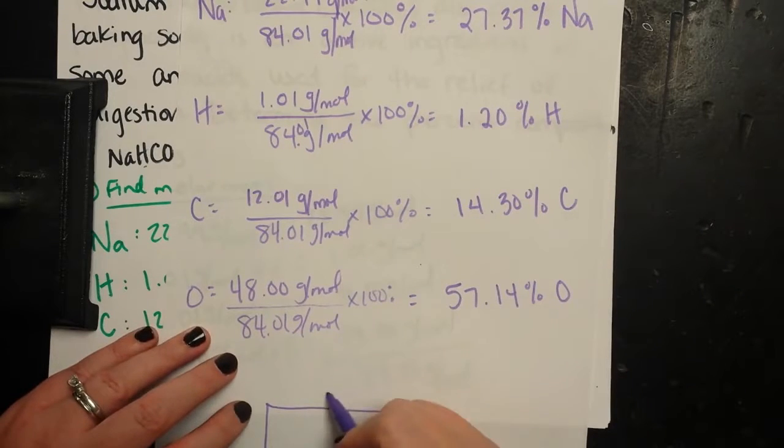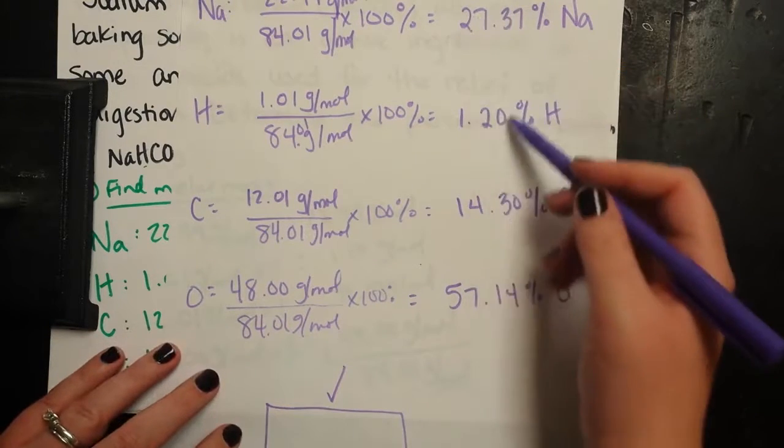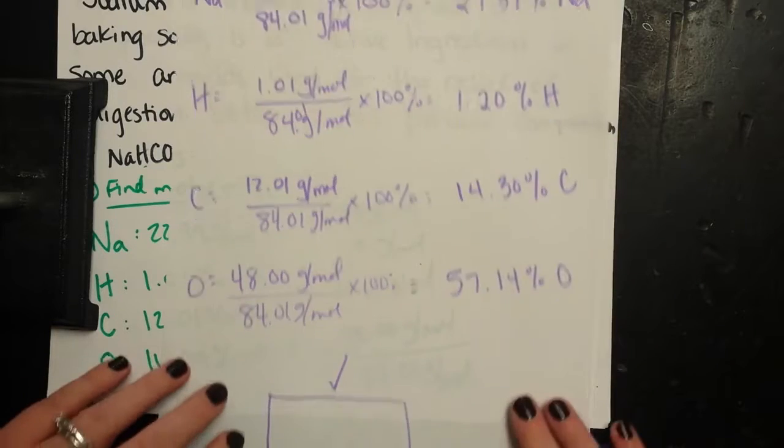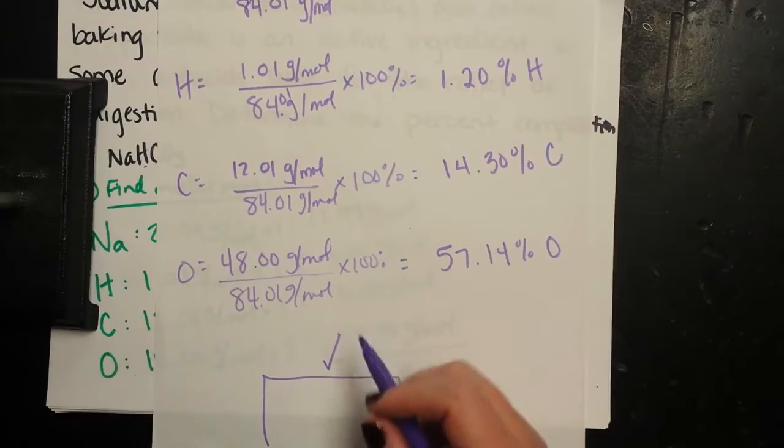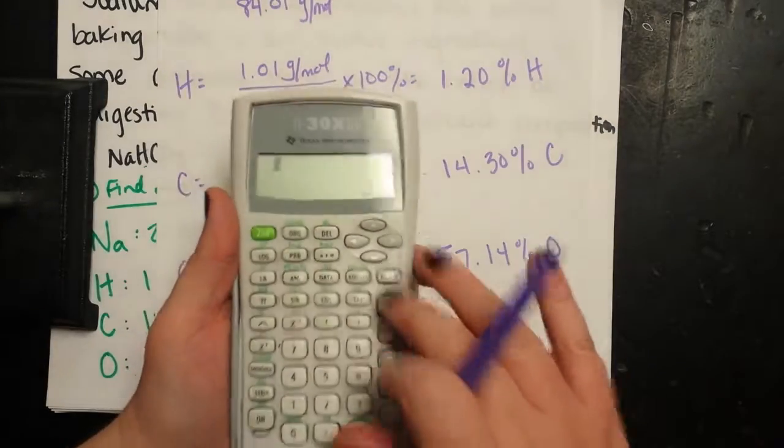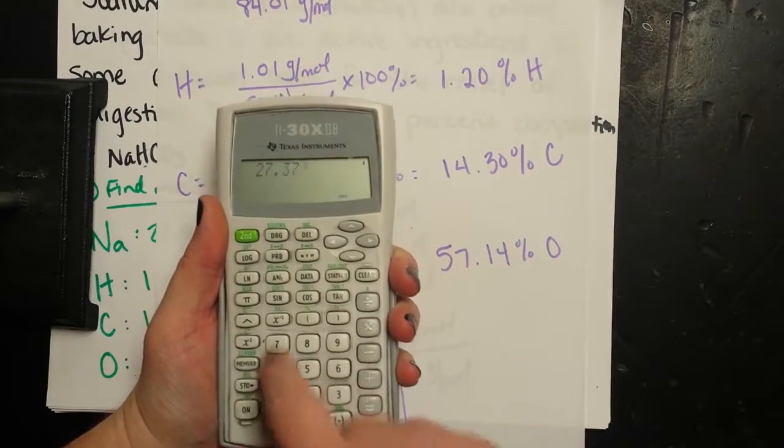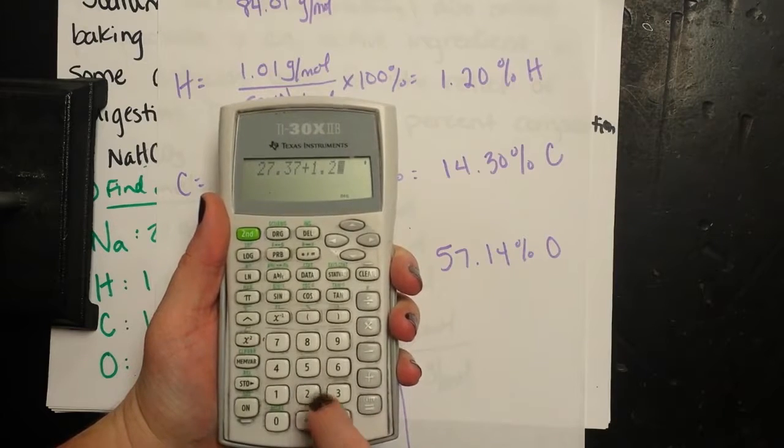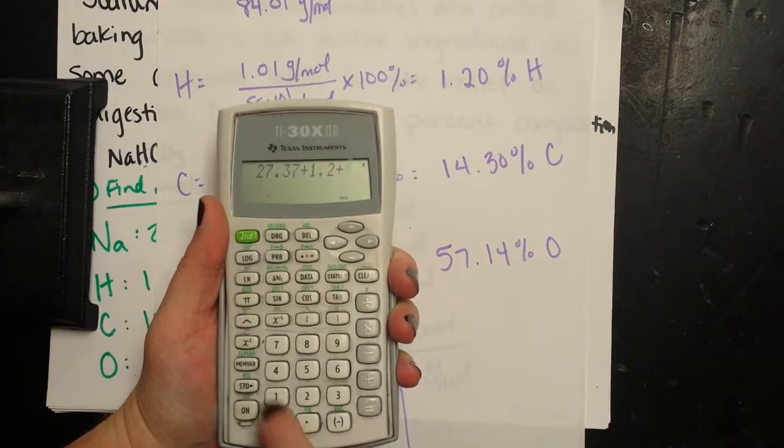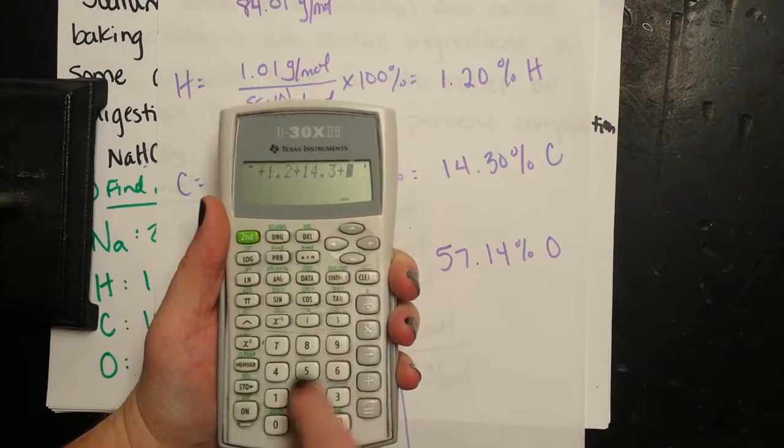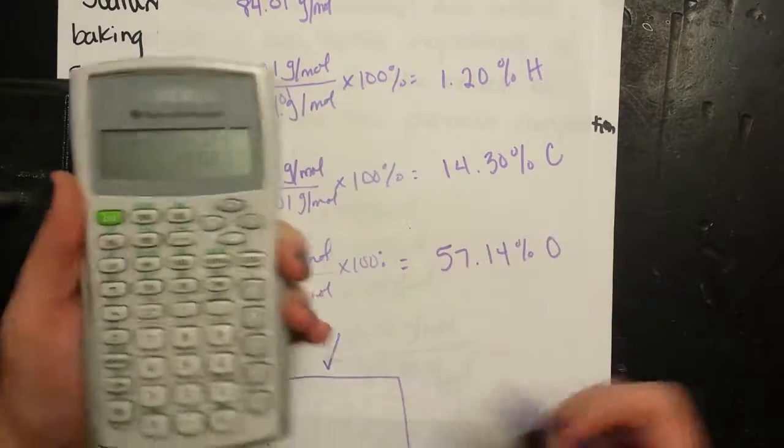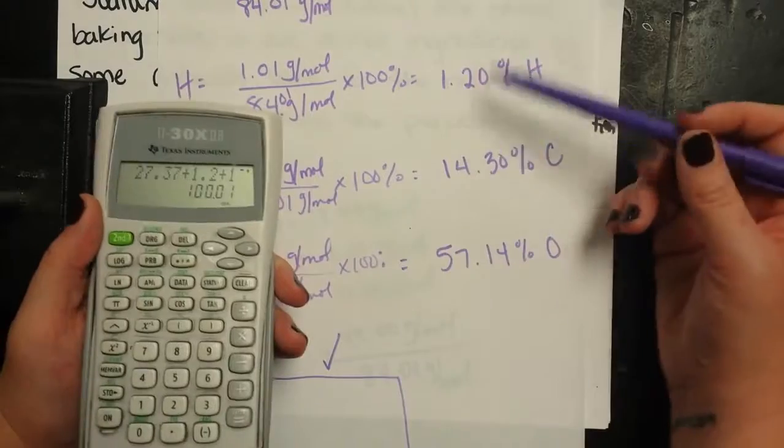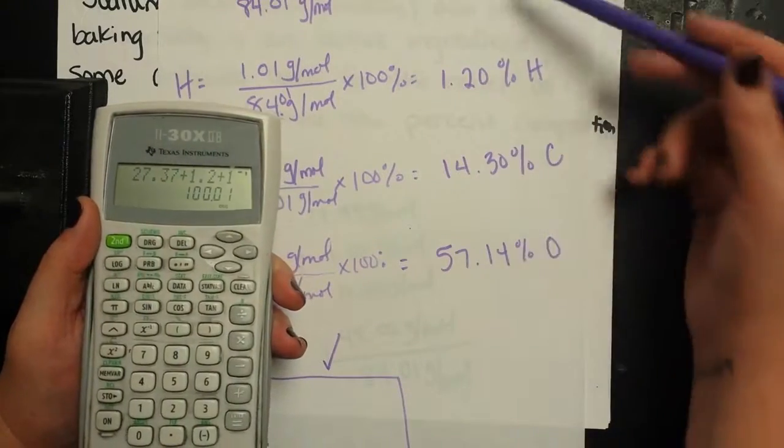All right, so I like to check my work and I'm going to add up all of these percentages. So I'm going to put 27.37 plus 1.2 plus 14.3 plus 57.14. See how I get 100.01?